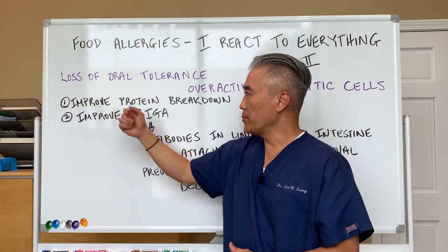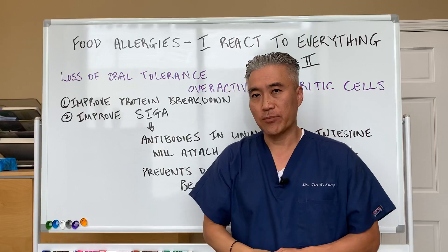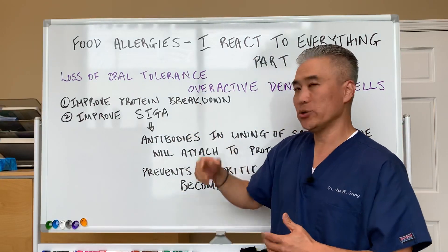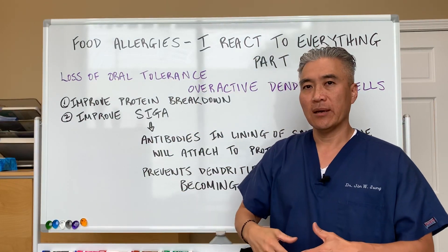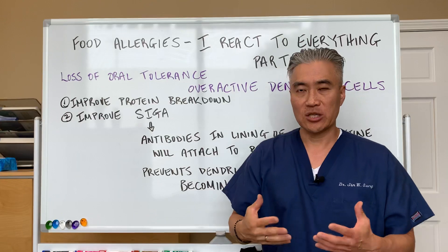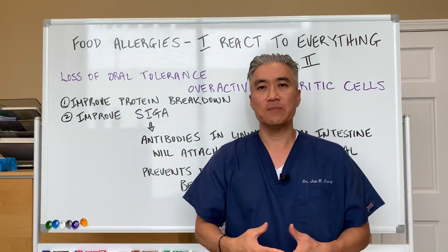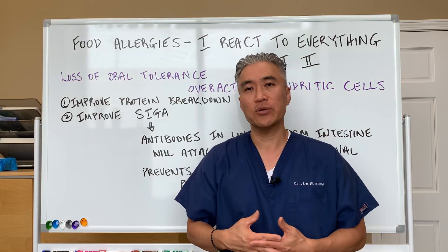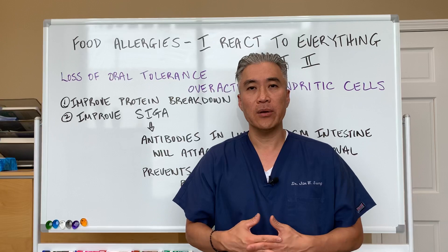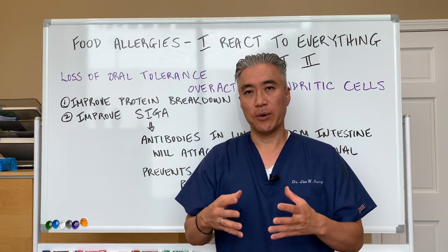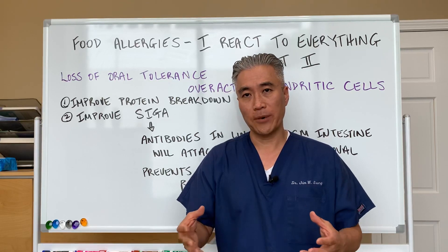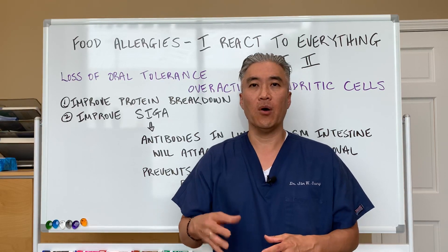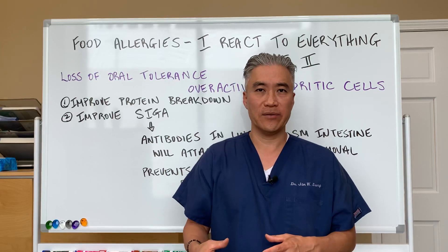One way to improve overactive dendritic cells is to improve protein breakdown. You can use things like digestive enzymes and HCL to break down proteins better into their smaller components, so the dendritic cells don't become overreactive.